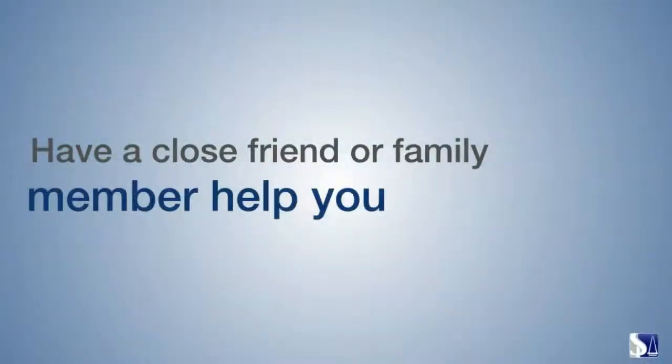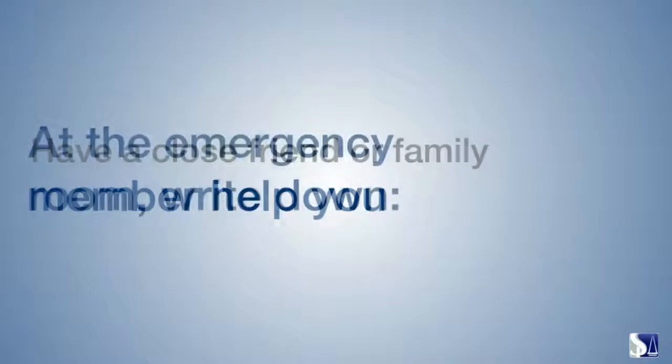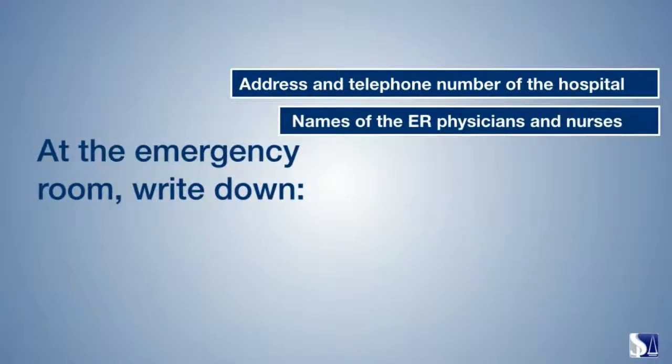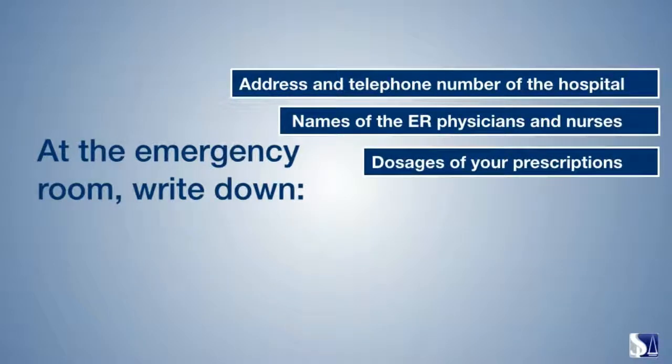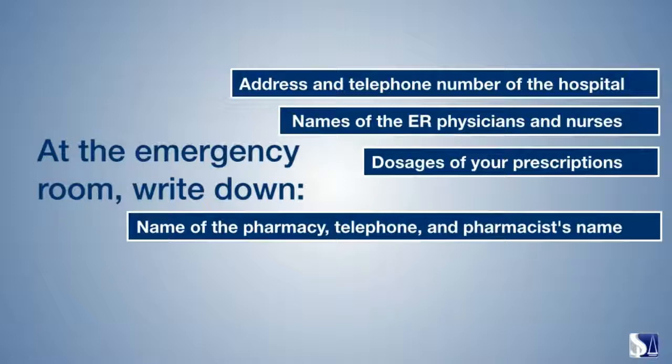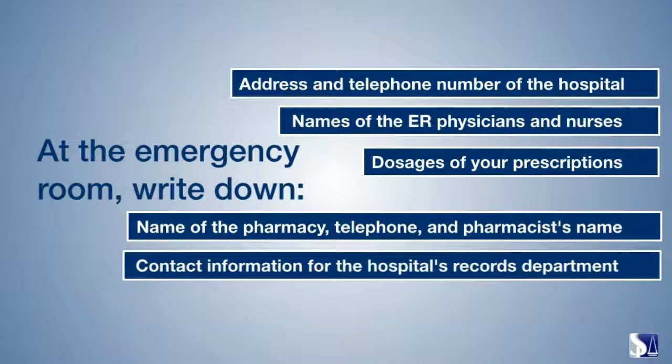While you're at the emergency room, write down the following: address and telephone number of the hospital, names of the ER physicians and nurses who treated you, dosages of your prescriptions and copies if possible, name of the pharmacy, telephone number and pharmacist's name, contact information for the hospital's records department so you can request copies of your medical charts.